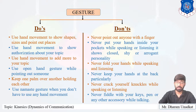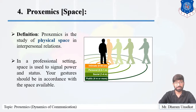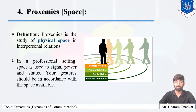These two topics are subtopics of kinesics, covered in the previous video. Now let's move to the new main topic: proxemics. Kinesics, proxemics, and paralinguistic features are the three components of nonverbal communication. Proxemics is the study of physical space and interpersonal relationships — that is, communication between individuals. Space is related to behavioral norms. The way people use space says a lot about them. In a professional setting, space is used to signal power and status — for instance, the head of a company has a larger space than junior employees.